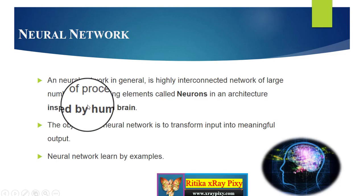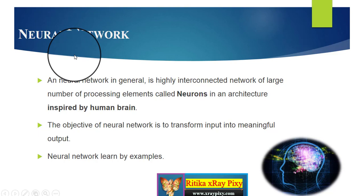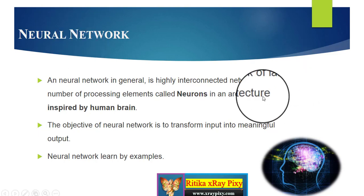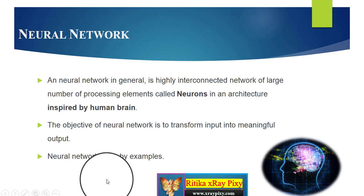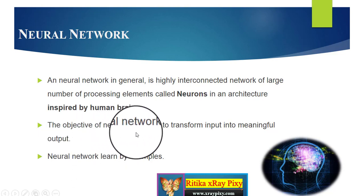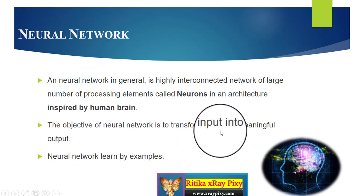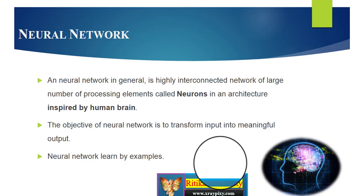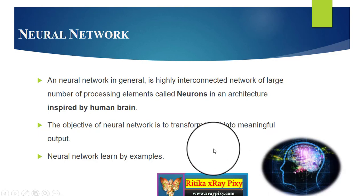First, what is a neural network? This is also called an artificial neural network. An artificial neural network is essentially a copy of the human brain — it is inspired by the biological architecture of the human brain. The main objective of a neural network is to transform the input into a meaningful output. Just as humans can learn by examples and past mistakes, neural networks can also learn from their past mistakes or examples.